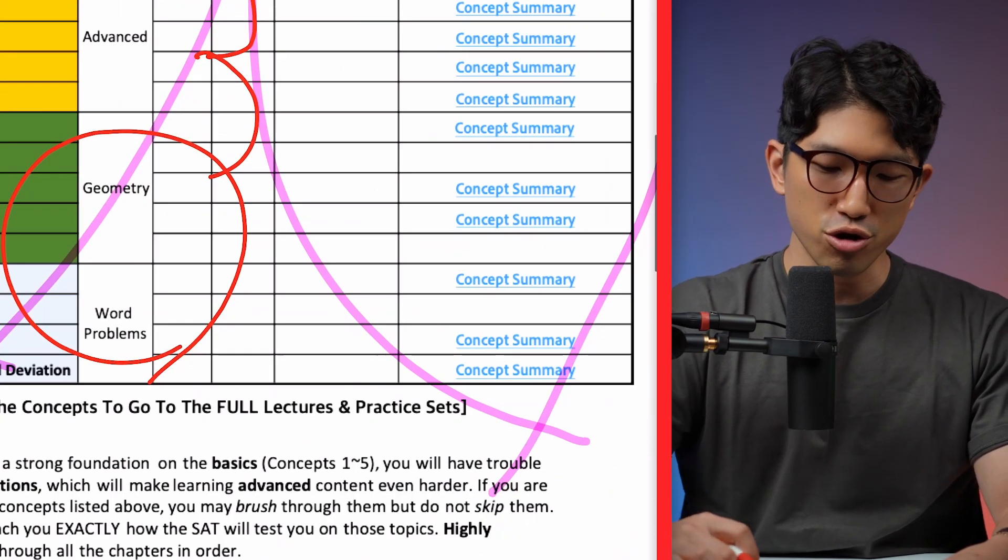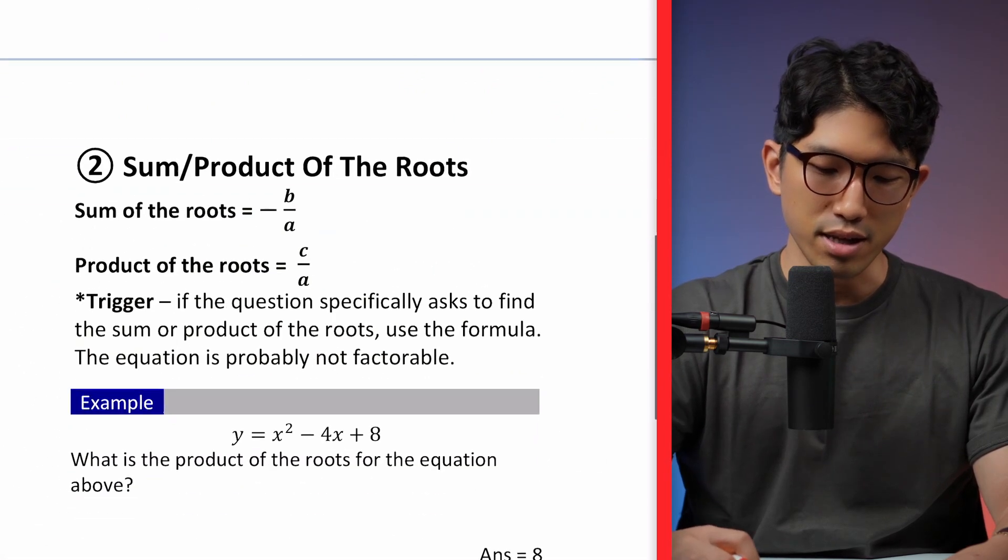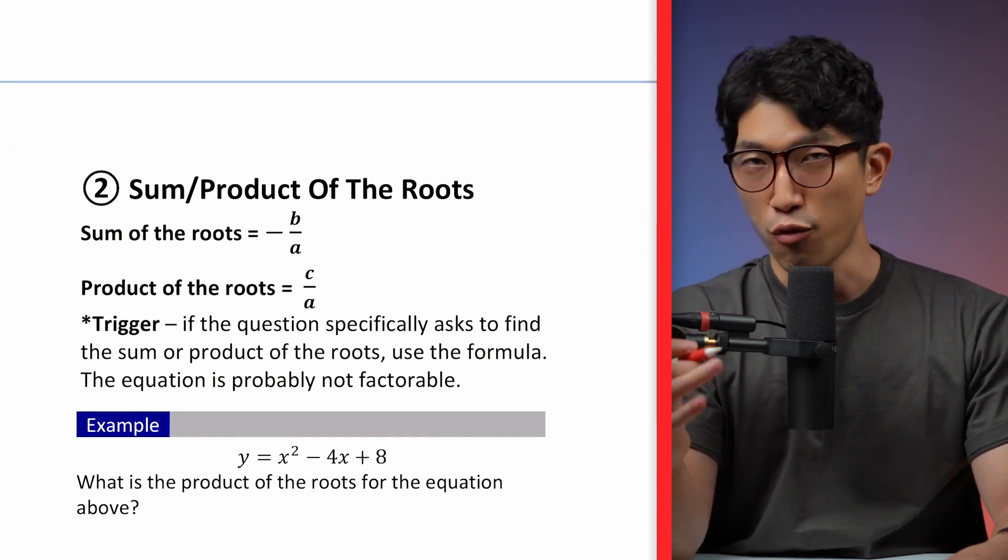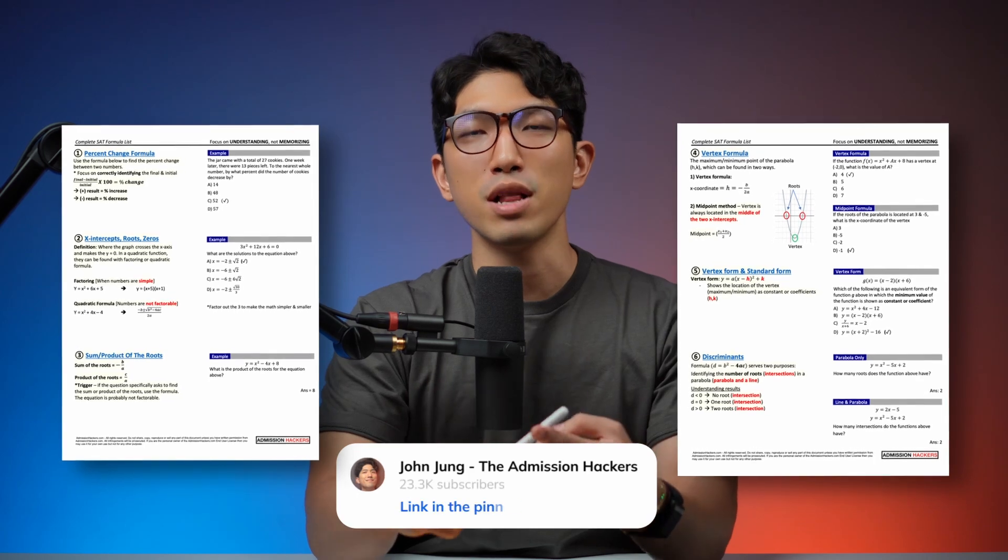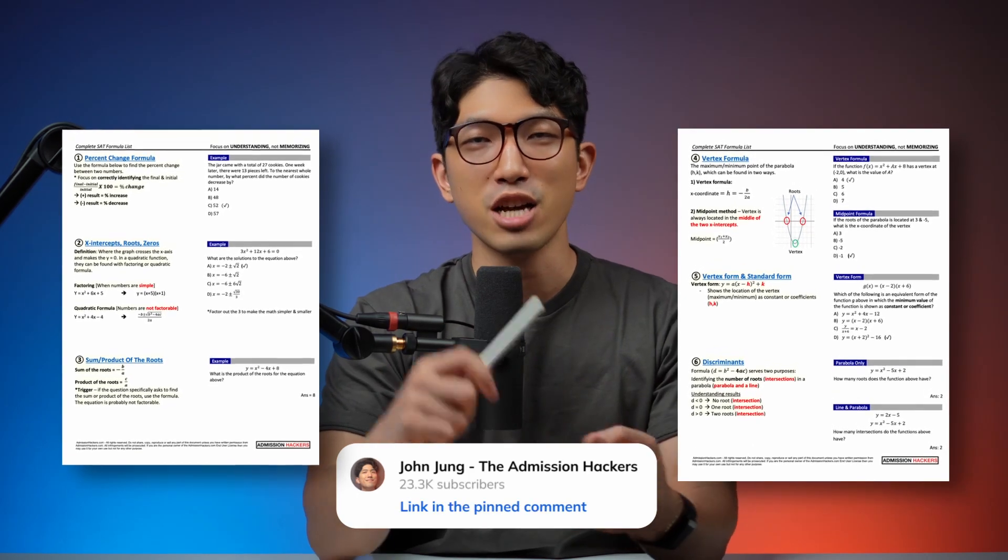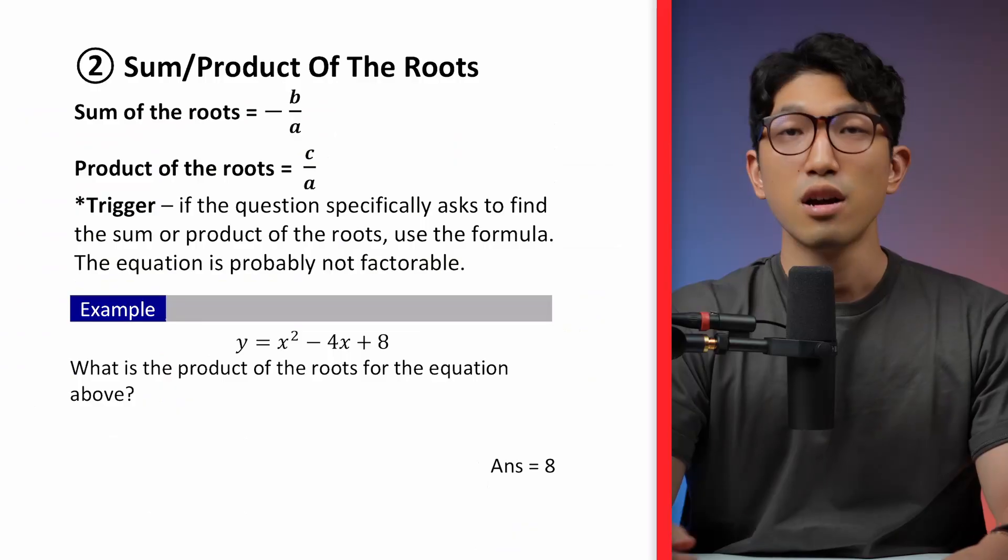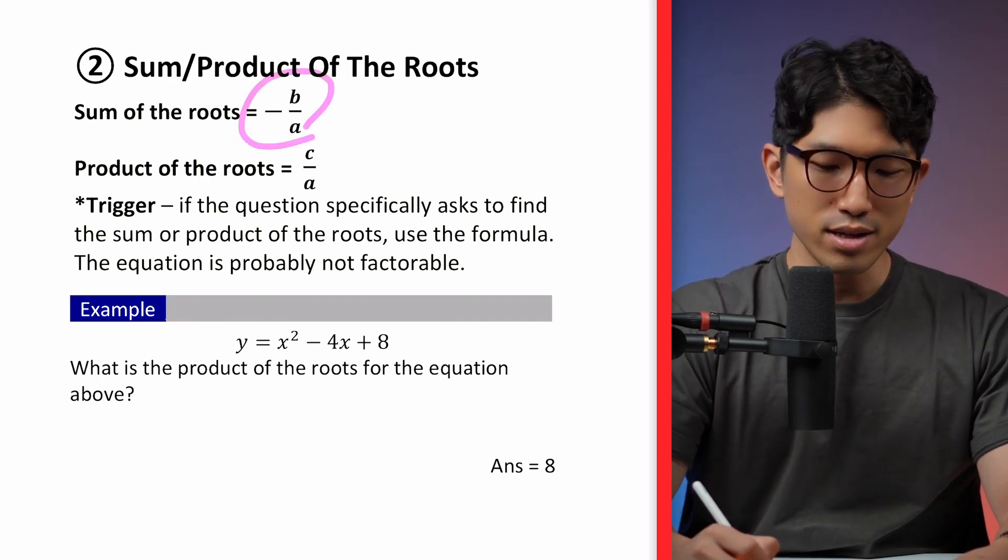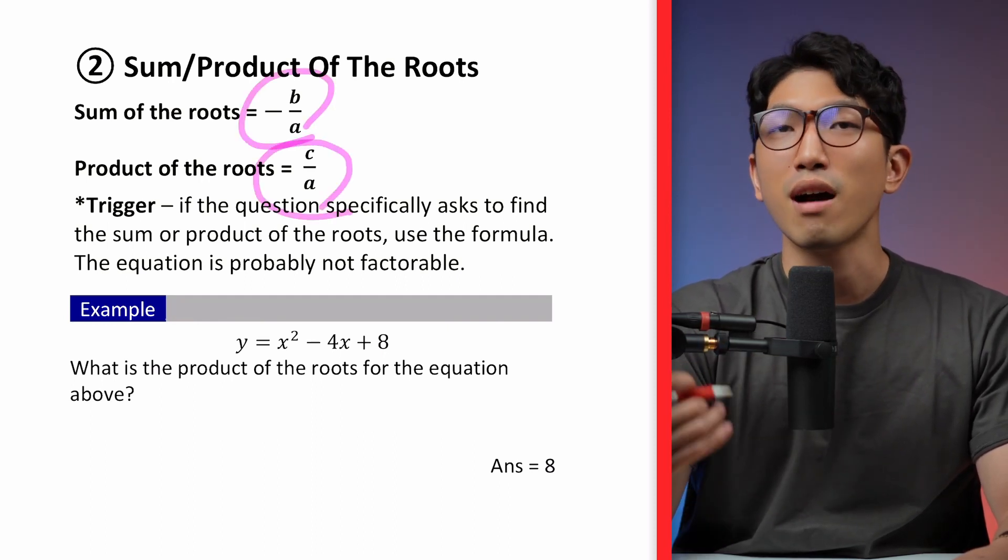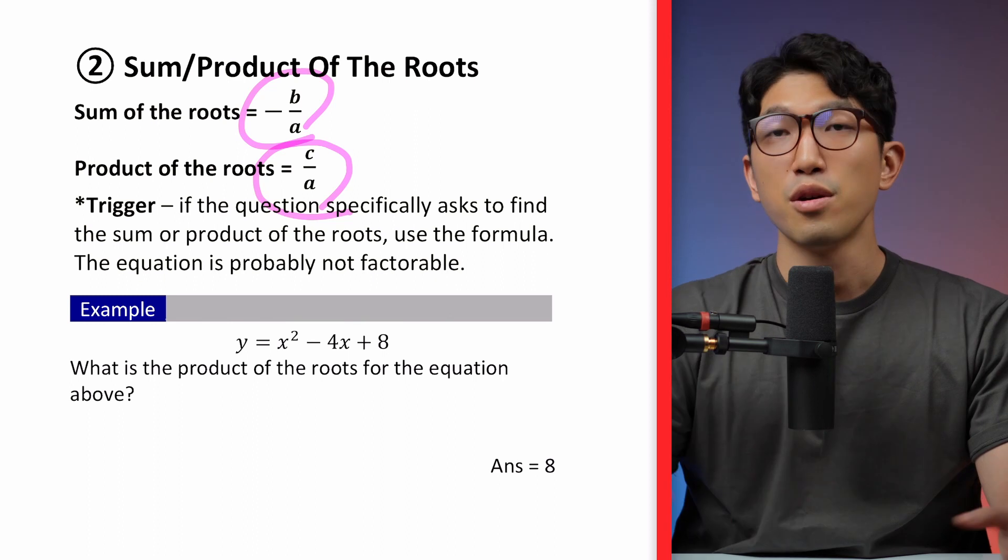And that is going to be the formulas. And if you want the full list of every single formula you need to know for the SAT, then check out the pinned comment for a full PDF. So for example, there are these two formulas known as sum and the product of the roots for a quadratic function.